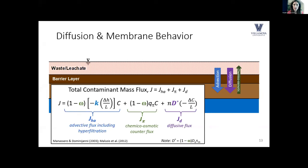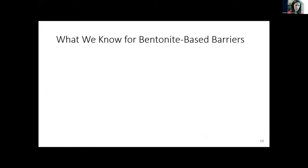If we just measure hydraulic conductivity, membrane efficiency, and diffusion coefficients — or have good values to estimate for them — we plug them in and we have a more holistic prediction of contaminant transport across the barrier. But there's the catch: the difficulty in having confidence and enough data available for membrane efficiencies and diffusion coefficients to really run with these expressions and improve our predictions.